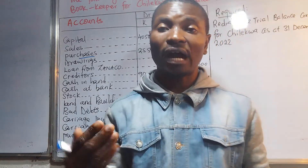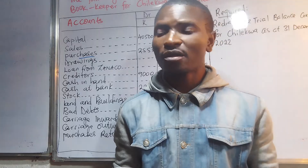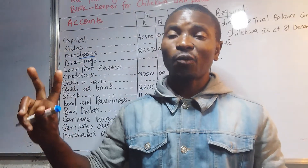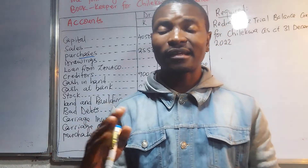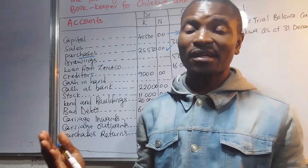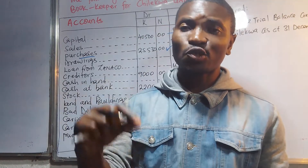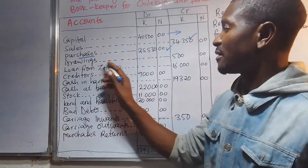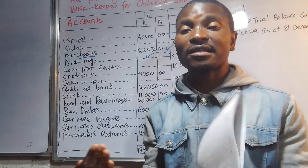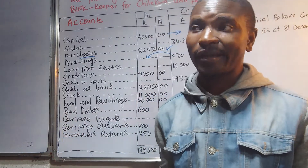Drawings is when you withdraw money from what you have. This money still belongs to you — the drawings account is for private purposes, but the money remains in your hands. Therefore, drawings should go to the debit side, meaning this money is in your account and belongs to you.